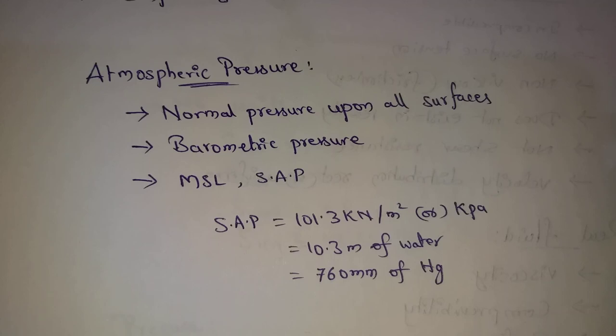SAP means standard atmospheric pressure. Standard atmospheric pressure equals 101.3 kN per meter square, or 101.3 kPa. Note that 1 kN per meter square equals 1 kPa.